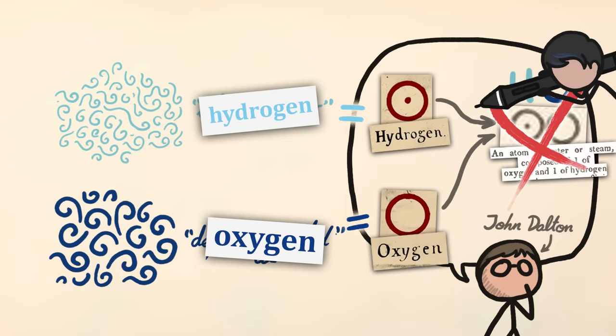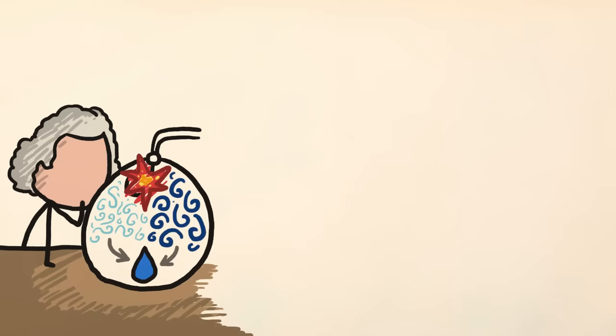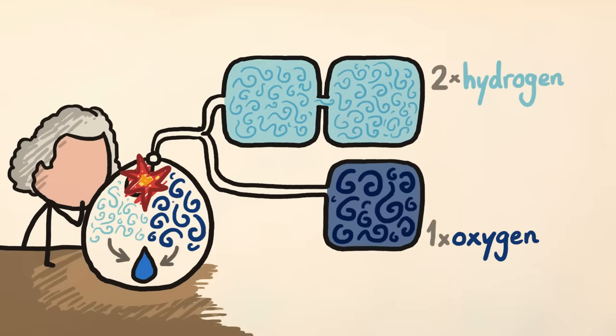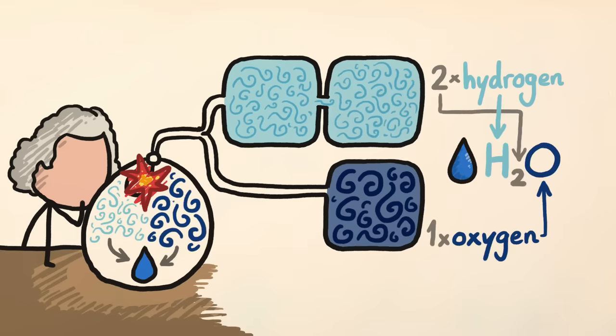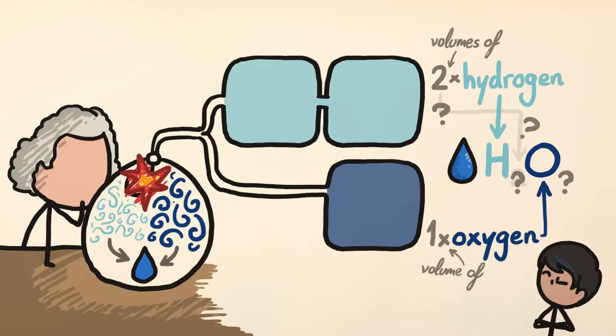Of course, this is wrong. But don't blame Dalton. He didn't have all the information yet. Every experiment had confirmed that water was made of exactly two volumes of hydrogen for every one volume of oxygen. And while this seems to indicate that water is H2O, it doesn't quite prove it. That's because they were working with volumes of gas.